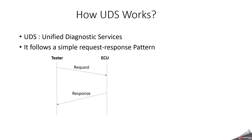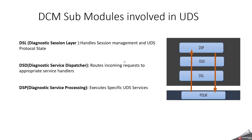This communication happens over CAN, Ethernet, and FlexRay, depending on the ECU network architecture. In DCM, we have three sub-modules: one is DSL, another one is DSD, and another one is DSP.